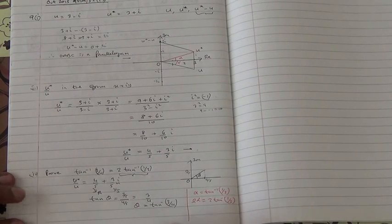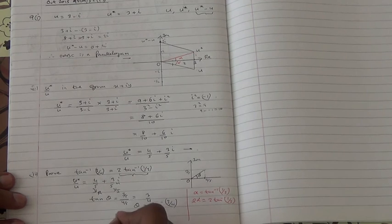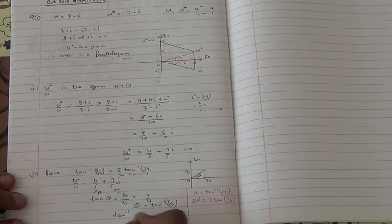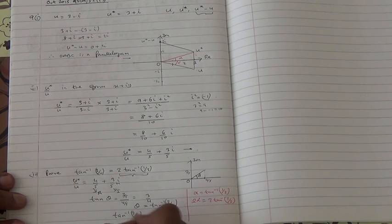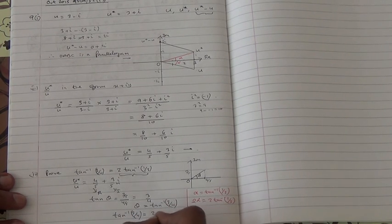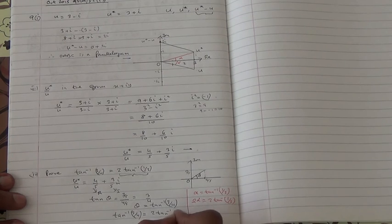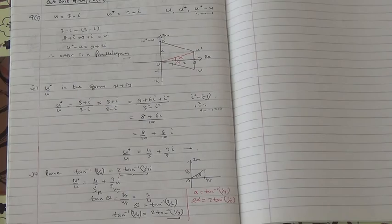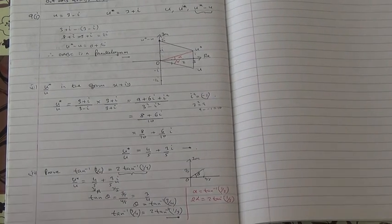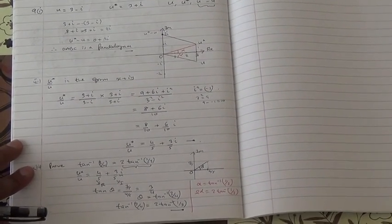And so it's been proven that inverse tan of 3 quarter is the same as 2 inverse tan of 1 third. Well, I hope that helps. So here we are for this part.